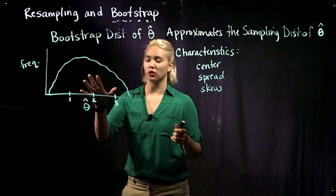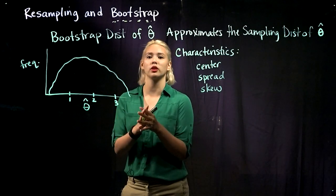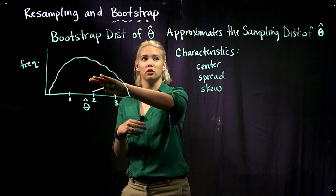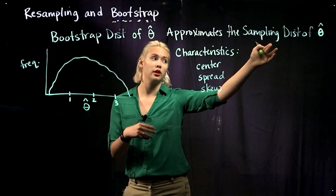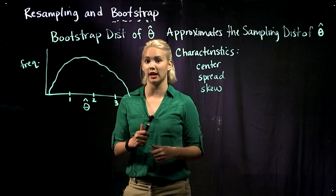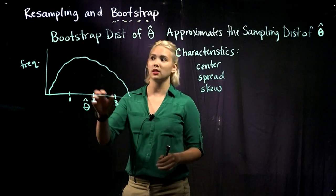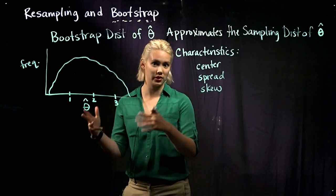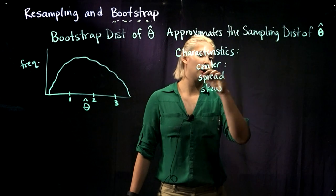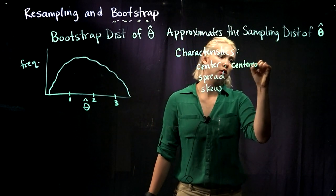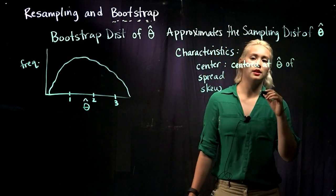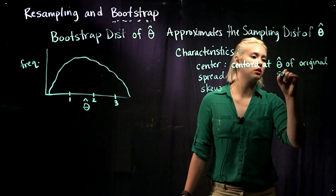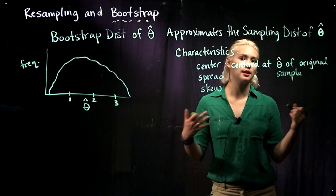So when we look at a histogram, we're often wondering where the center of the histogram is. In this case, we're wondering: does the center of our bootstrap distribution correspond with the center of our sampling distribution for theta hat? And the answer is actually no. The center of our bootstrap distribution is going to be approximately the theta hat of our original sample — it is centered at the theta hat of our original sample, not at theta.